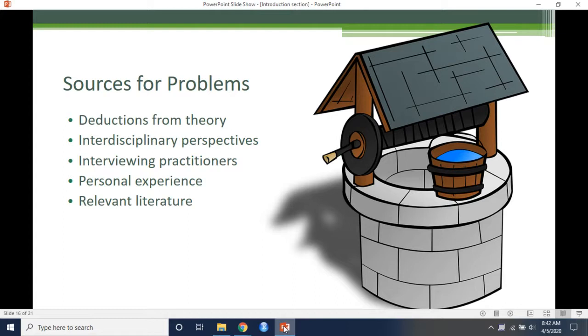Consider these three broad sources of inspiration. Deductions from theory: this relates to deductions made from social philosophy or generalizations embodied in life and society that the researcher is familiar with. These deductions from human behavior are then fitted with an empirical frame of reference through research. From a theory, the researcher can formulate a research problem or hypothesis stating the expected findings in certain empirical situations. The research asks the question, what relationship between variables will be observed if theory aptly summarizes the state of affairs? One can then design and carry out a systematic investigation to assess whether empirical data confirm or reject the hypothesis and hence the theory.